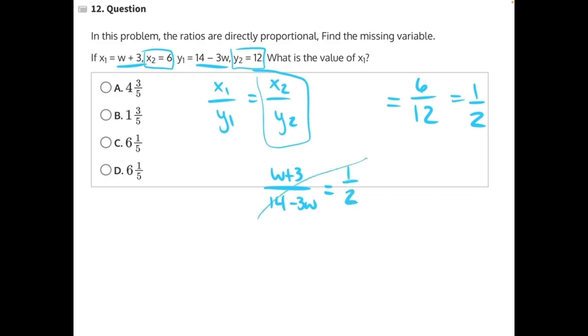And now we can cross multiply. 1 times anything is just itself, so we'll have 14 minus 3w equals 2 times w plus 3. Let's do distributive property. 2 times w is 2w, 2 times 3 is 6, and bring everything else down.